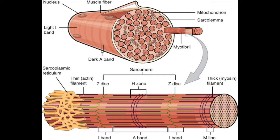Keep in mind that the A band does not change in length, but the H zone and the I band do change in length with differing degrees of contraction. If it helps, drawing out the sarcomere to understand this can be a very useful exercise.